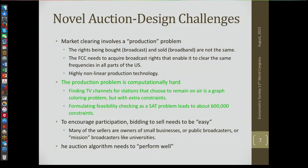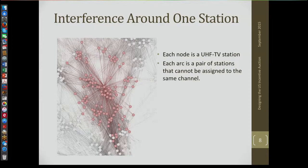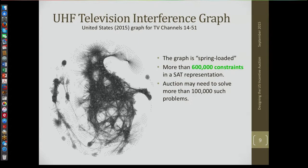I want to talk for just a moment about the production problem being computationally hard. This is a graph of the interference around one station — you see here a station in the center of the graph. Each node in this graph is a UHF TV station. Each arc is a pair of stations that cannot be assigned to the same channel. This is the kind of constraint we have if you think about this as a graph coloring problem.